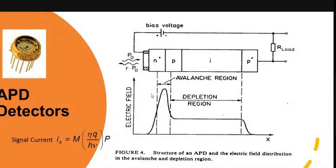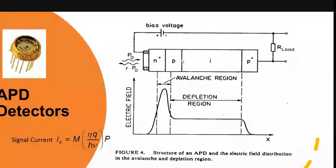The configuration of the avalanche photodiode is n+, p, intrinsic, p+. Here, n+ means it is heavily doped, p+ means heavily doped with p-type dopant, and p without any sign means lightly doped. Similarly, if it were n without a sign, it would also be lightly doped. This region is the intrinsic region.